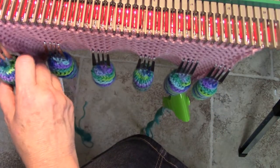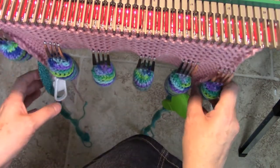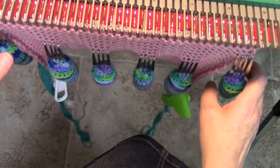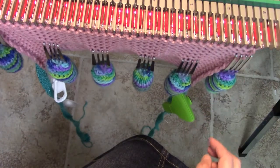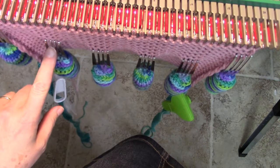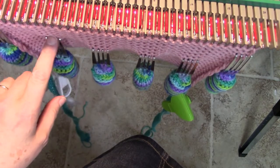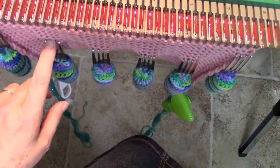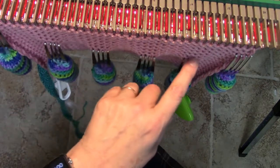So if you keep weights at least on the edges every three or four rows, move those weights up, it keeps that pull from happening. And this machine likes a lot of weight, so I put claw weights about every five needles.